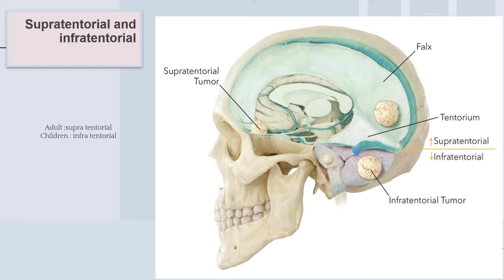To understand the difference between the supratentorial and infratentorial regions, we have to understand the meninges and the meningeal covering inside the brain. The brain is completely protected by the meninges, which also include the falx cerebri separating the two cerebral hemispheres, and the tentorium, which separates the cerebellum from the cerebrum. Any tumor above the tentorium is called supratentorial, while below the tentorium is called infratentorial.